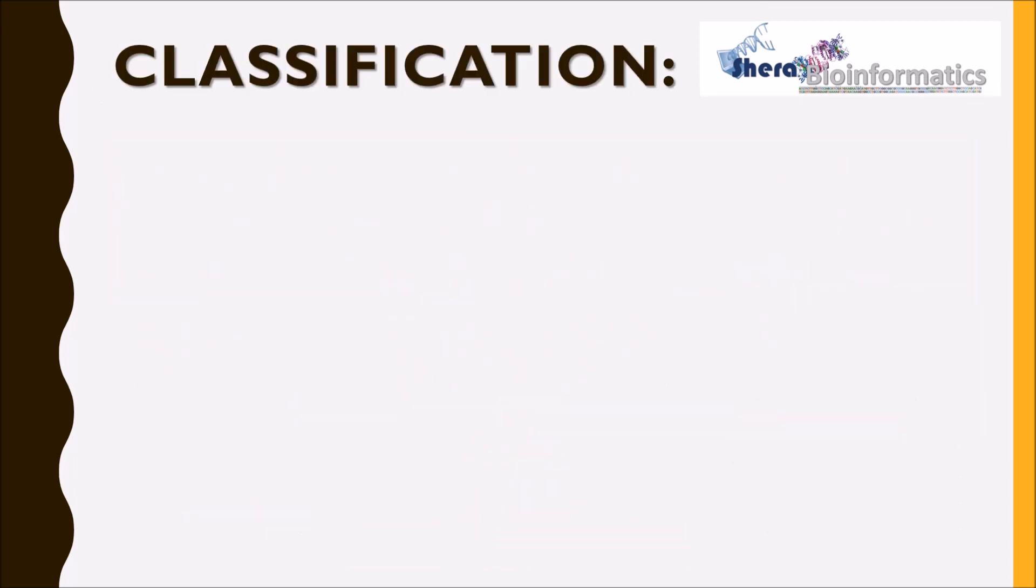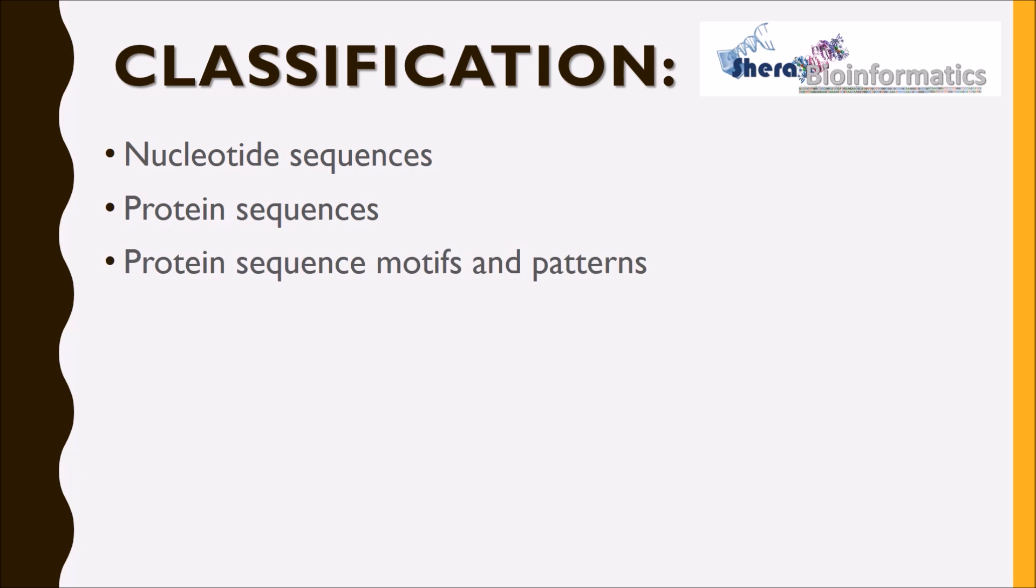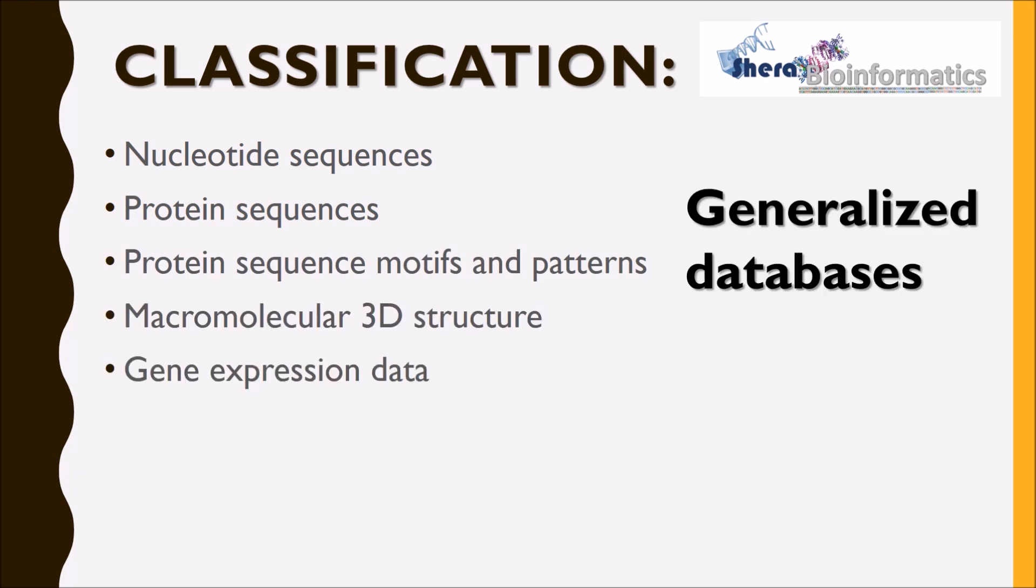How is biological data classified? Biological data is classified based on molecular type. Biological databases store relevant information together. The data can be nucleotide sequences, protein sequences, protein motifs, three-dimensional structures, or gene expression data.